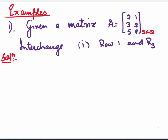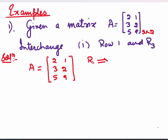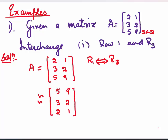Let's understand the three elementary row transformations using examples. In the first example, we are given a matrix A of order 3 by 2 and we are asked to interchange row 1 and row 3. The matrix A has elements 2, 1, 3, 2 and 5, 9. We write R1 interchanged with R3. The third row comes to the place of the first row, the first row goes to the third row, and the second row remains as it is.